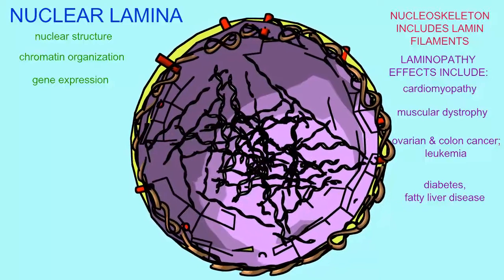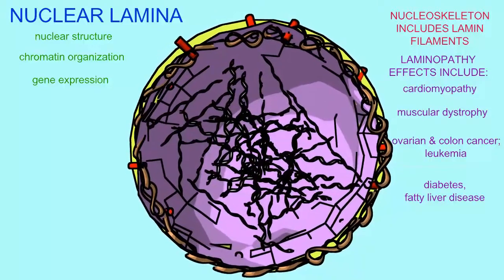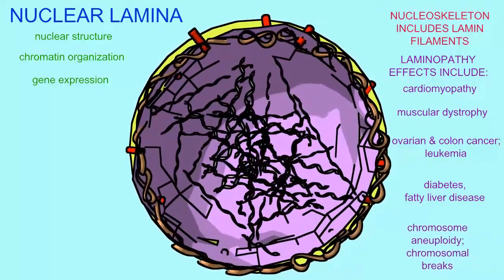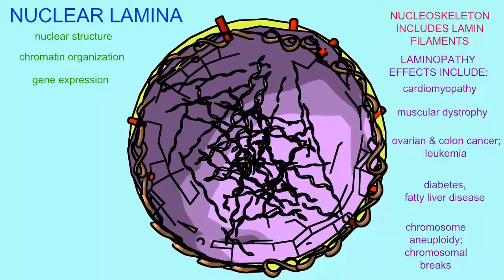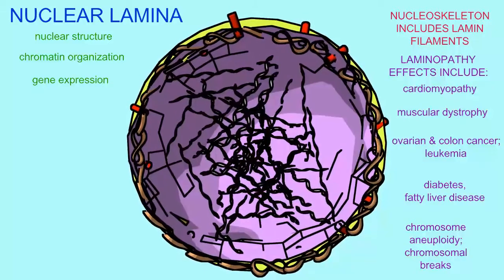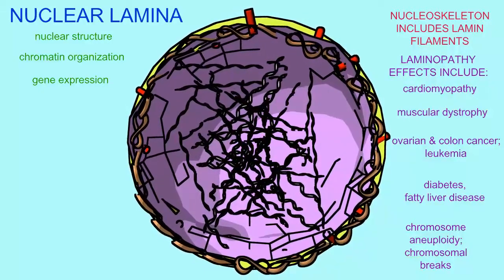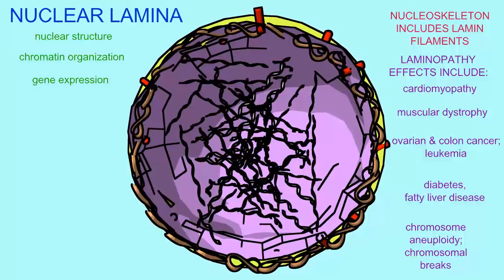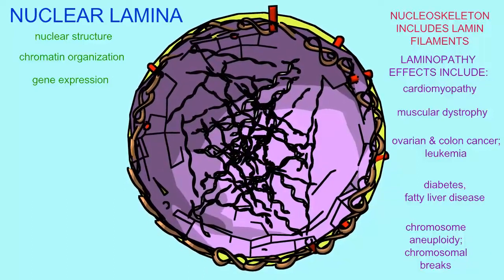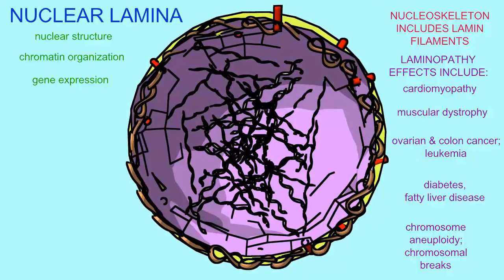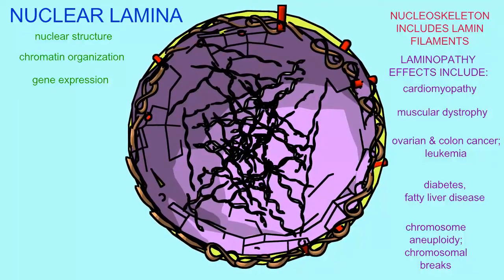Many of the mutations cause effects which are so severe they are difficult to study, because they cause the death of infant mice which express these mutations. They can result in abnormal chromosome segregation, resulting in a new ploidy, increased number of chromosome breaks, changes to the genome stability, and many other effects.